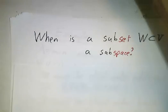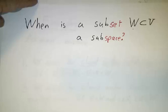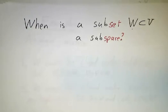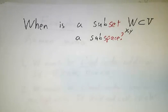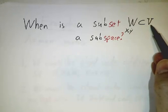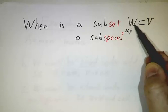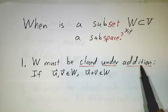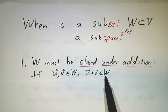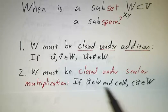If I give you a vector space V and a subset W of V, is W a subspace? A subspace is something that is a vector space in its own right. If I give you any two points in W, you know how to add them because they're in V — but their sum might not be in W. So W has to be closed under addition: the sum of any two things in W must also be in W.